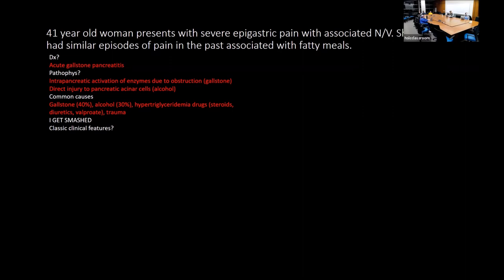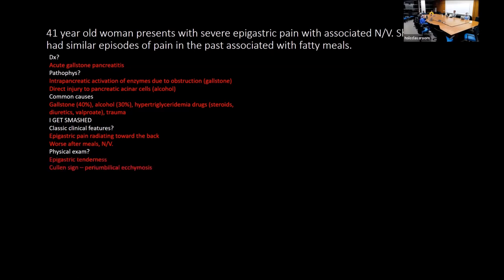Classic clinical presentation of pancreatitis is epigastric pain radiating to the back, worse after meals, with nausea and vomiting. Physical exam findings include epigastric tenderness. There are also specific signs: Cullen sign (periumbilical ecchymosis), Grey Turner sign (flank ecchymosis), and Fox sign (ecchymosis over the inguinal ligament) — all suggesting retroperitoneal hemorrhage.